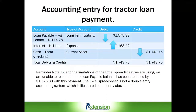Now let's look at the accounting entry. In this particular case, the accounting entry for this loan payment is a compound entry. In line one, we have loan payable to the ag lender for the New Holland T4.75 tractor, and a loan payable is a long-term liability reflecting a three-year loan. The principal payment of $1,575.33 decreased the loan outstanding balance with the debit entry as shown in line one. In line two, the portion of the loan payment for interest, which is a farm operational expense, increases with the debit entry of $168.42.